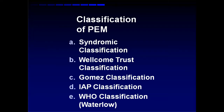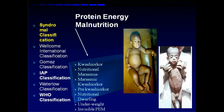Let us see how protein energy malnutrition is classified. There is something called syndromic classification, which is based on clinical features. It includes Kwashiorkor, nutritional marasmus, marasmic Kwashiorkor, pre-Kwashiorkor, nutritional dwarfing, underweight, and invisible PEM. We will go through each one of them one by one.